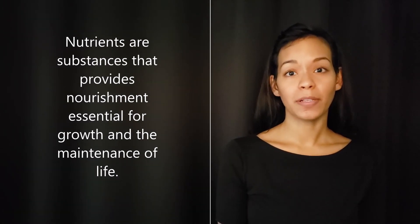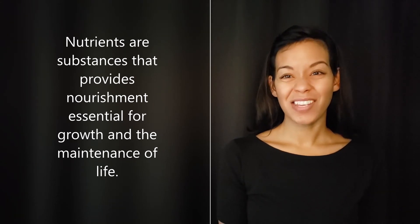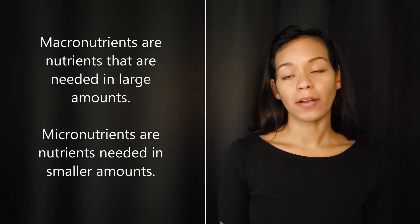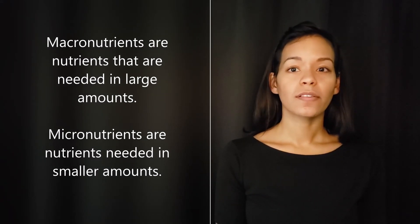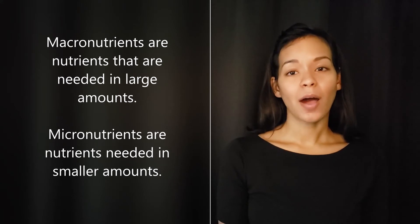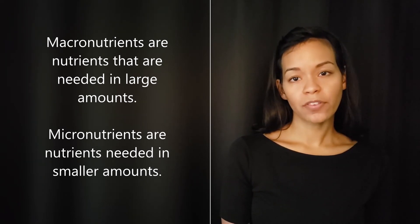Productivity is influenced by the availability of nutrients, and nutrients are elements and compounds that organisms need for survival. Elements and compounds like nitrogen, carbon, and phosphorus are needed in large amounts and these are called macronutrients. Nutrients like zinc, copper, and iron are needed but in smaller amounts and they are called micronutrients.